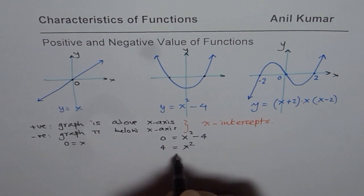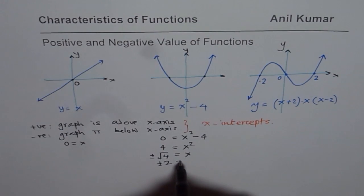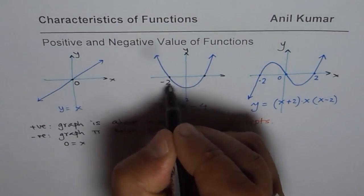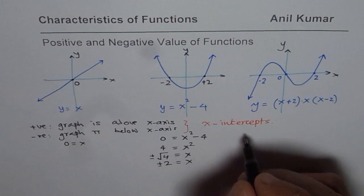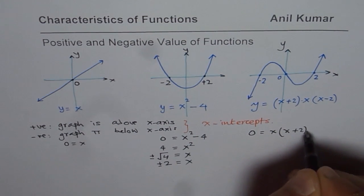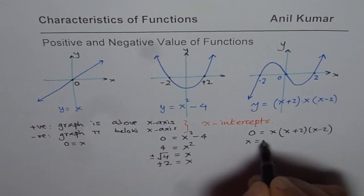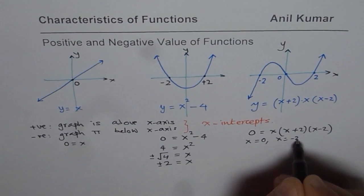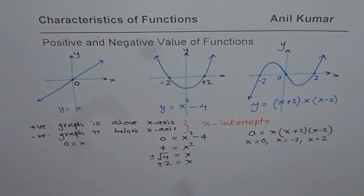We can rearrange: 4 equals x squared, or square root of 4 equals x. Remember, whenever you take a square root you write plus and minus, giving two answers: x equals plus and minus 2. So we have minus 2 and plus 2. For the cubic, writing 0 equals x times x plus 2 times x minus 2, this is zero for three values: x equals 0, x equals minus 2, and x equals plus 2. Those are the three values shown on the graph.